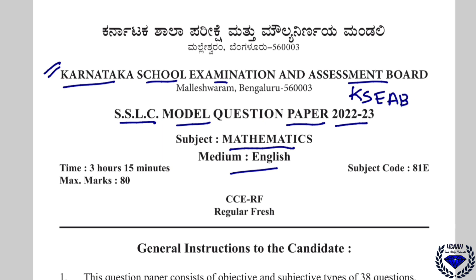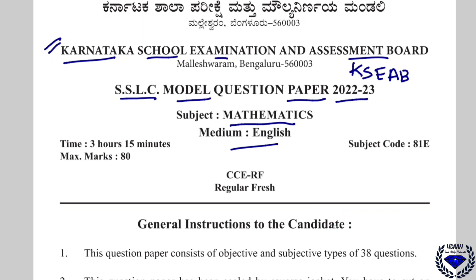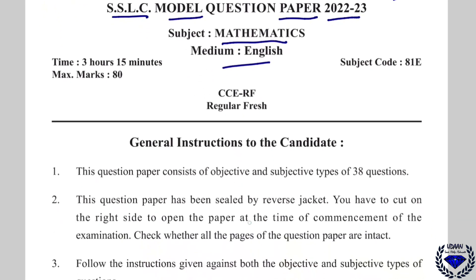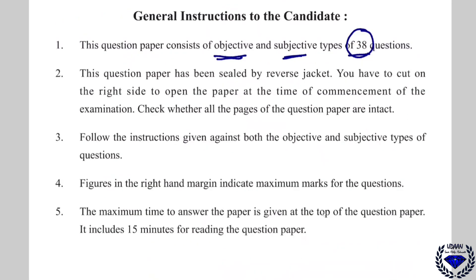This is the most expected paper for your upcoming board examination, March-April 2023. This question paper consists of objective and subjective question types, 38 questions in total. This is part 1 of our discussion, where I will be discussing the objectives and 1-mark questions. In subsequent parts I will discuss 2-mark, 3-mark, 4 and 5-mark questions.